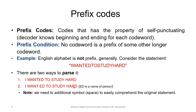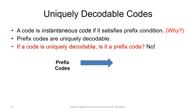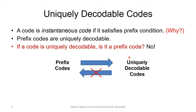A code is instantaneous if it is a prefix code — another way of saying you can directly decode without waiting until the end. Prefix codes satisfy the prefix condition and are instantaneous codes. Prefix codes are also uniquely decodable, but uniquely decodable codes are not necessarily prefix-free.